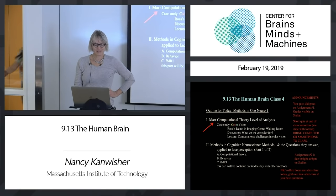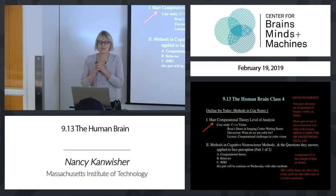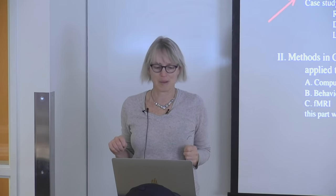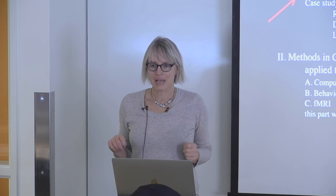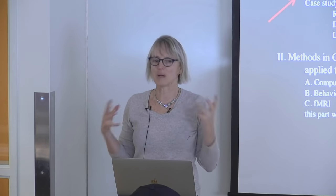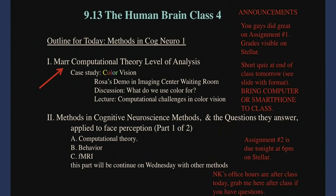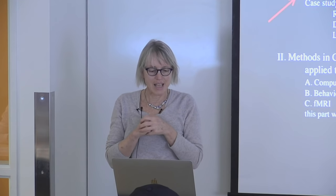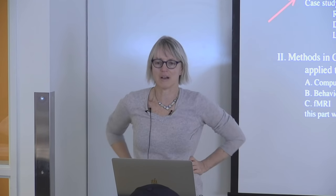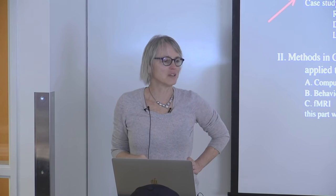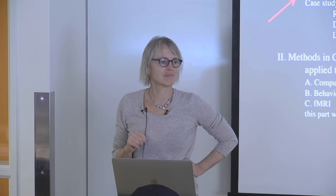Today we're going to talk about Marr's computational theory level of analysis — a way of asking questions about mind and brain. We'll discuss that in the case of color vision, then do a demo, and in the second half start a session on methods in cognitive neuroscience to understand the human brain, illustrated with the case of face perception.